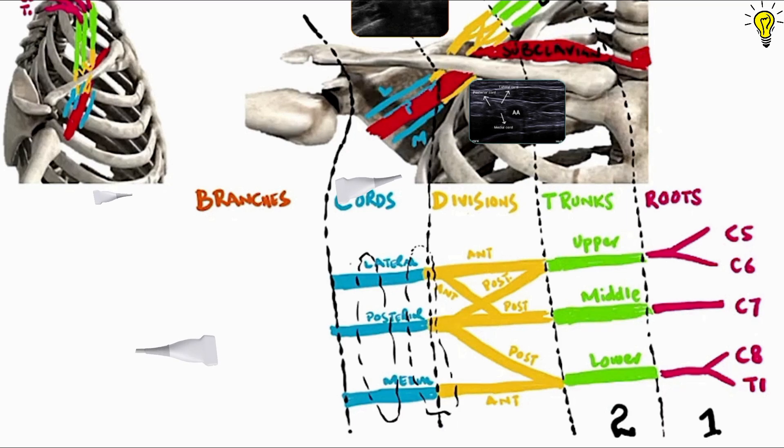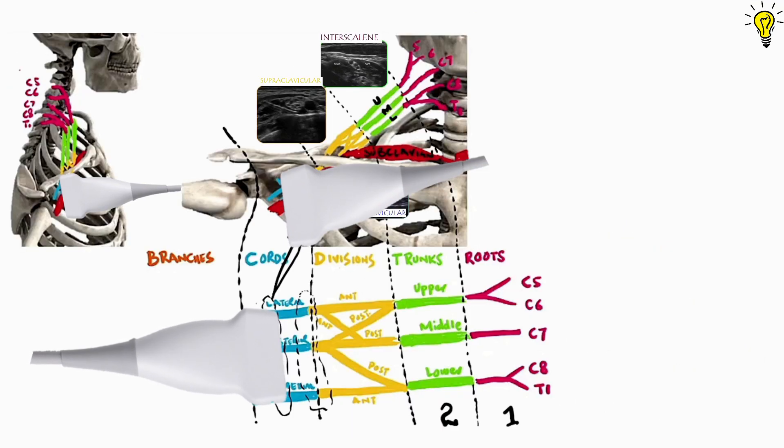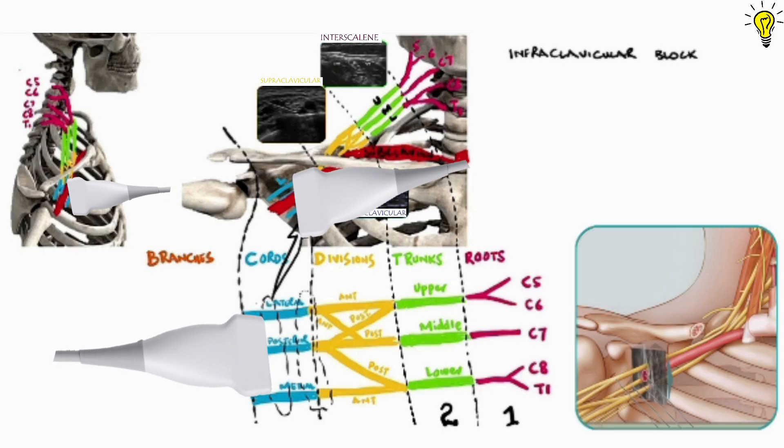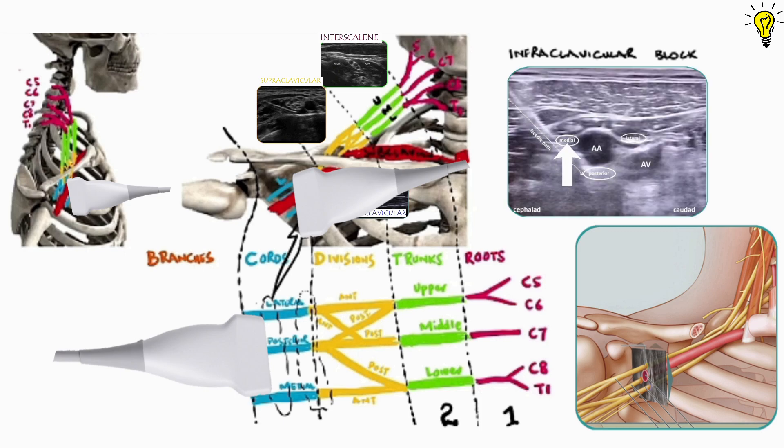The second window to see the cords is in infraclavicular blocks where the cords are running around the artery in their respective relations. Placing the transducer here helps ultrasound dissect planes and cords as shown in the diagram here. So on screen you can see the three cords lying in their respective relations to the axillary artery.